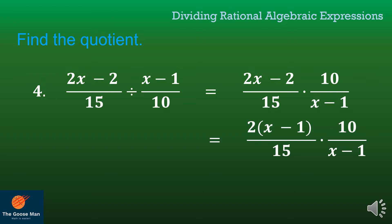Take note that x minus 1 and x minus 1 are the greatest common factor, so I'll remove it. Next, between 10 and 15, it is divisible by 5: 15 divided by 5 is 3, while 10 divided by 5 is 2. Multiplying the remaining factors: 2 times 2 is equal to 4 all over 3. Therefore, the answer is 4 over 3.